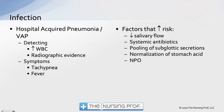Systemic antibiotics also increase the risk, as does pooling of subglottic secretions — secretions from the nose and mouth pooling on top of the endotracheal tube balloon. The balloon in the trachea seals off the tube, but it can also compress the esophagus slightly, causing secretions to follow the endotracheal tube into the lung. Normalization of stomach acid, giving proton pump inhibitors, and keeping the patient NPO also increase risk. Translocation of gut bacteria into the bloodstream can also cause pneumonia.